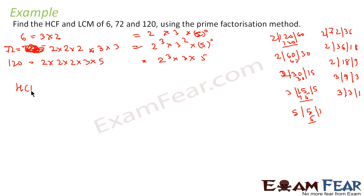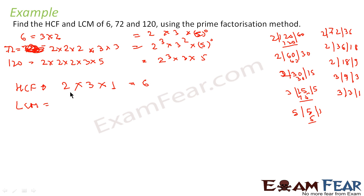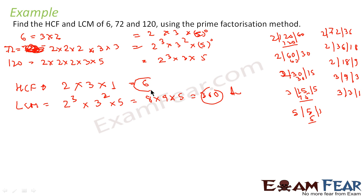Now to find the HCF: for the power of 2, both have 2 to the power 3 — but wait, 72 has 2 to the power 1 minimum... the highest common power of 2 is 2 to the power 1. For 3, the highest common power is 3 to the power 1. For 5, the common power is 5 to the power 0, which is 1. So HCF = 2 into 3 = 6. For LCM, the maximum power of 2 is 2 to the power 3, maximum power of 3 is 3 to the power 2, and maximum power of 5 is 5 to the power 1. LCM = 8 into 9 into 5 = 360.